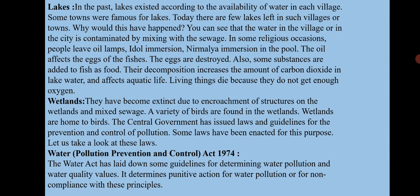Next: wetlands. Wetlands are lands where plants grow, and when plants grow there, birds migrate to those places. However, wetlands have become extinct nowadays due to the encroachment of structures on them and mixing of sewage. Due to polluted waste water, the plants cannot survive and are getting extinct day by day. A variety of birds are found in wetlands, which are also home to various bird species.